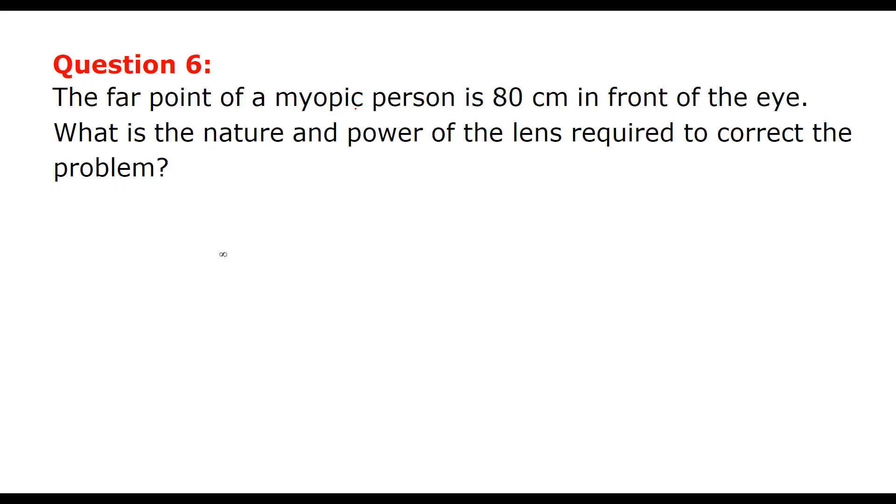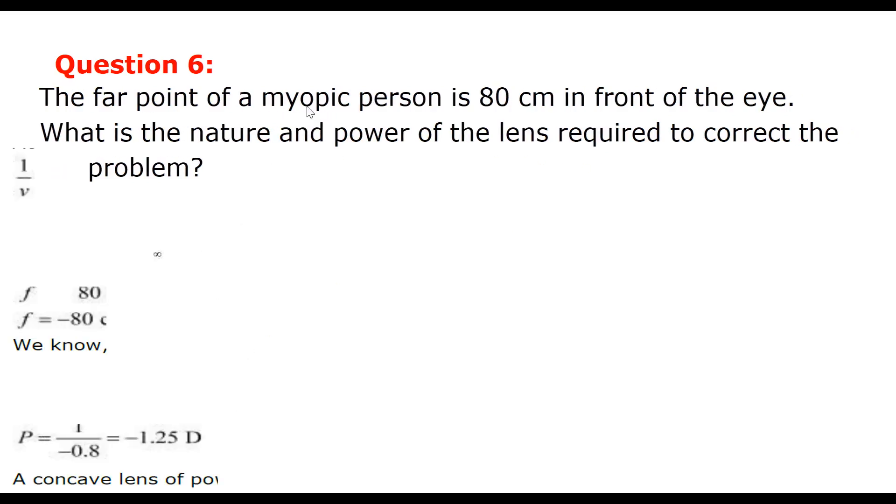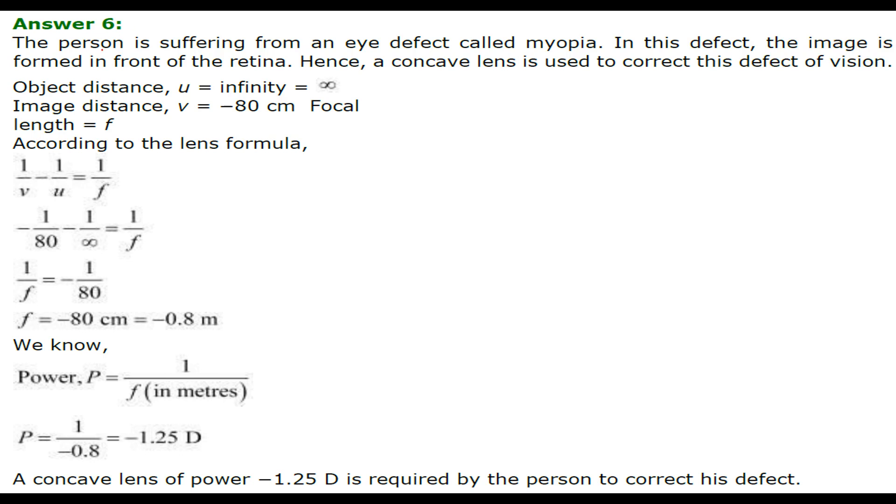The far point of a myopic person is 80 centimeter in front of the eye. The myopic person has the problem that he is not able to see distance objects clearly. The hypermetropia person will not be able to see the things which are closer to the eyes. What is the nature and power of the lens required to correct the problem?